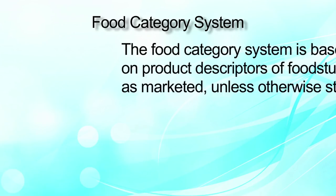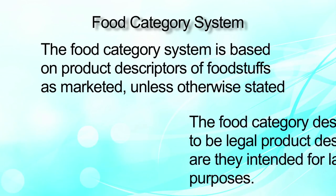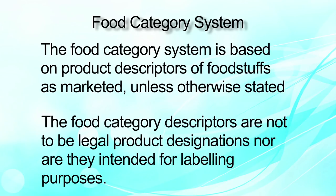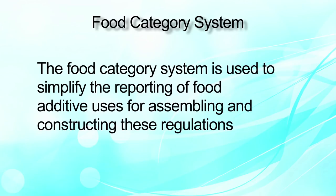The food category system is based on the product description of the foodstuff as marketed unless otherwise stated. The food category descriptors are not legal product designations and not intended for labeling purposes — it is just for licensing and regulation. The food category system is used to simplify the product of the food additives used for assembling and constructing in this regulation. The categorization is done for regulation, for licensing and registration, and it is not a legal product designation for labeling purposes.